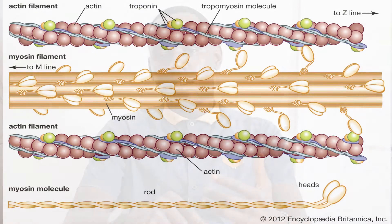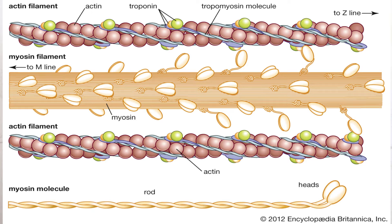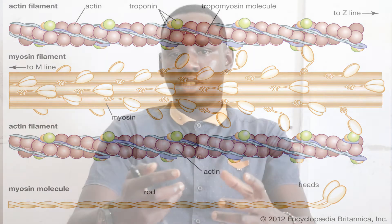The actin has a binding site on it. It has the troponin and the tropomyosin. On the other hand, the myosin has a head whose function is to attach to the binding site on the actin so that the sliding can take place and eventually contraction occurs. However, this binding site is hidden or blocked by the tropomyosin.